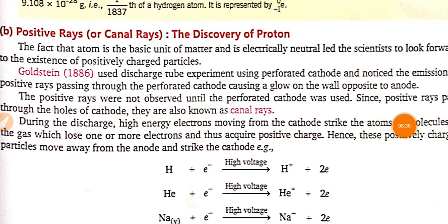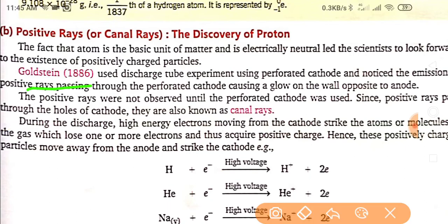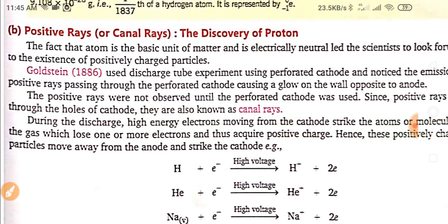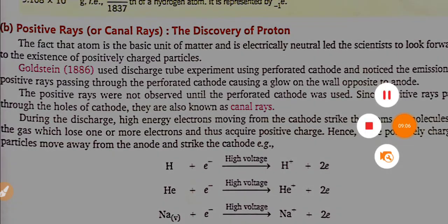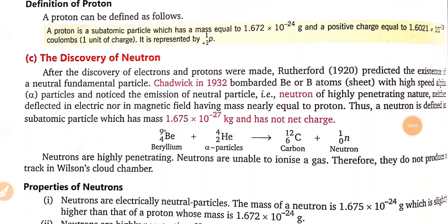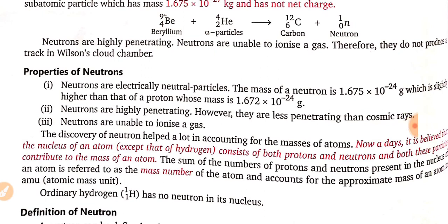Next is positive rays or canal rays, the discovery of proton. Goldstein discovered the proton or positive rays. The positive rays were not observed until the perforated cathode was used, so it used perforated cathode. Since positive rays pass through the hole of cathode they are known as canal rays also. So you read from your home this proton and discovery of neutron. I will share with you the discoveries of proton and neutron and electron via these animation videos if I found after this completion of this session.